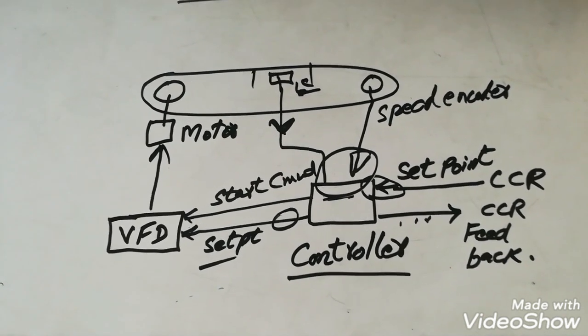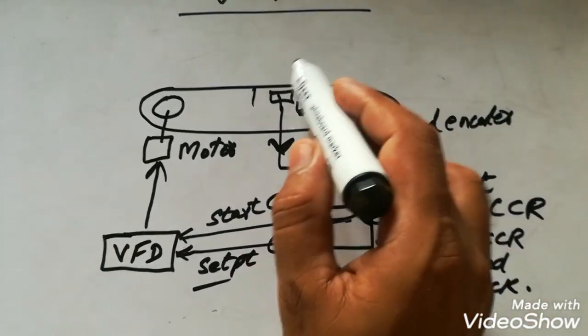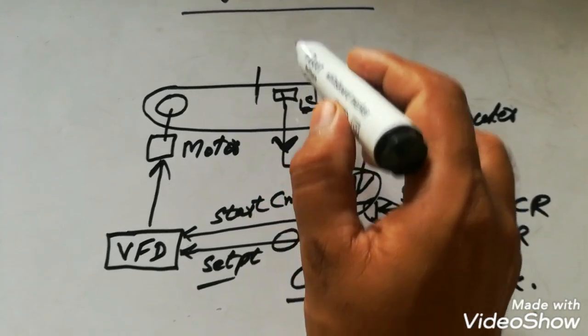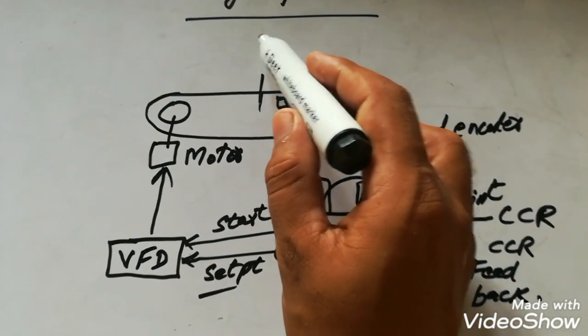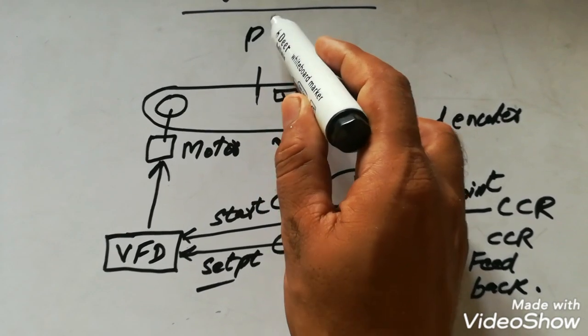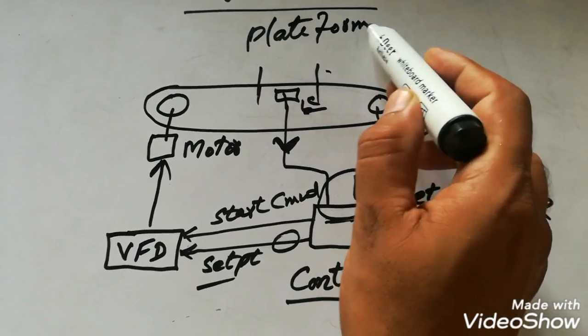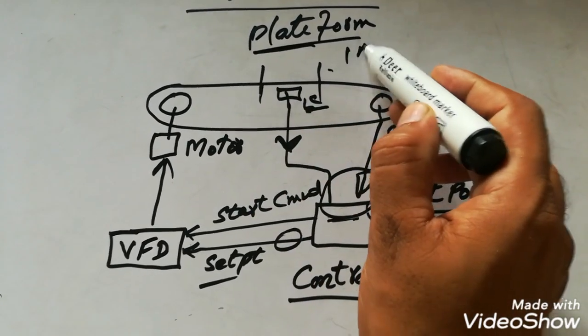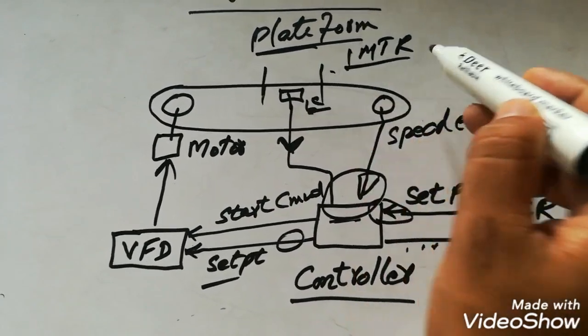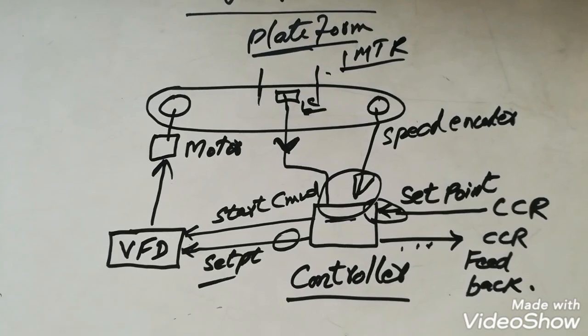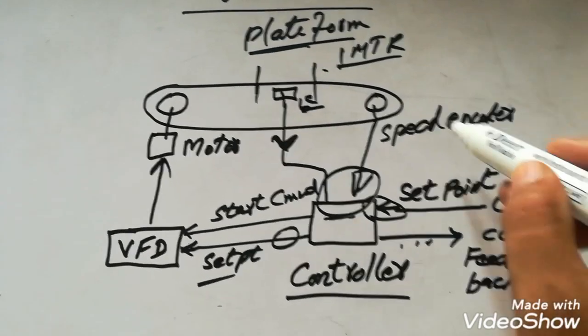So this is the main working procedure of the wave feeder. This area where our load cell is located is called the platform. The platform length is normally 1 meter. It may be 0.5, it may be anything.